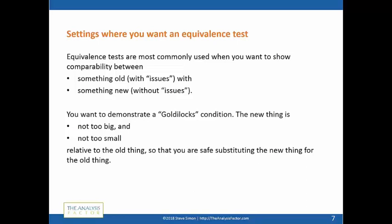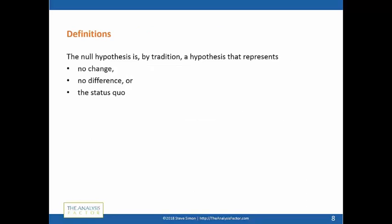With equivalence testing, we're looking at a Goldilocks condition — not too big, not too small. You want to replace something with issues with something without issues; you want to substitute it, but only if they're measuring more or less the same thing.